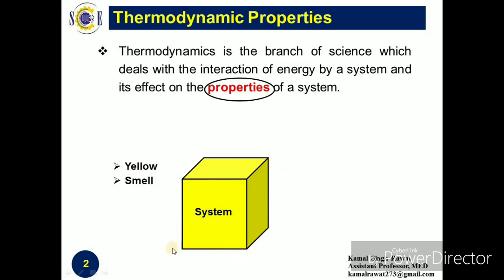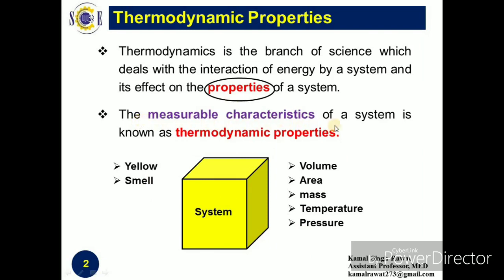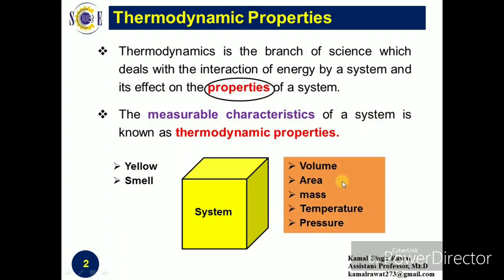The system also occupies some volume in space, so the value of volume is also a characteristic of this system. Similarly, area, mass, temperature, and pressure are also characteristics of this system. All these are characteristics of this system, and property is nothing but a characteristic of a system. However, only the measurable characteristics of a system are known as thermodynamic properties. The measurable characteristics are very important because in thermodynamics, for defining state, the property must have a fixed value. So these are the thermodynamic properties.